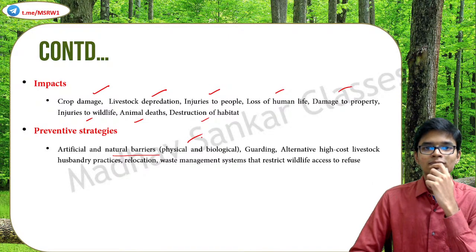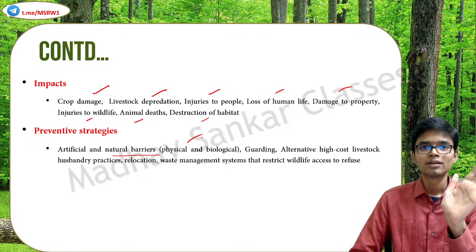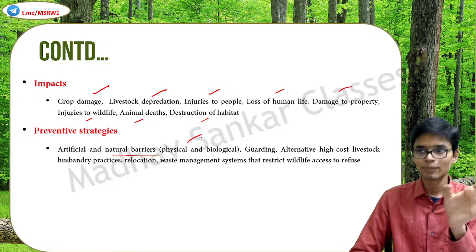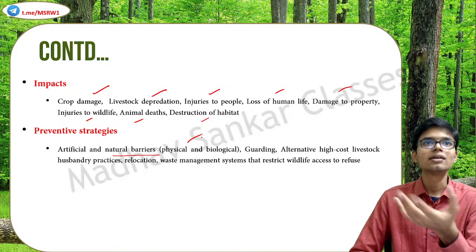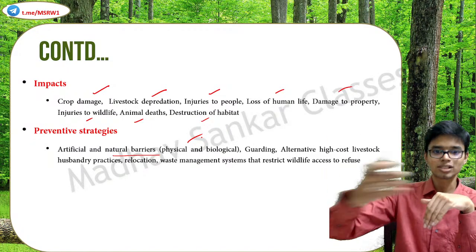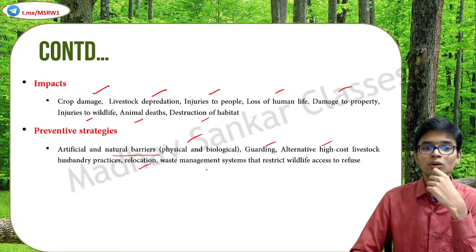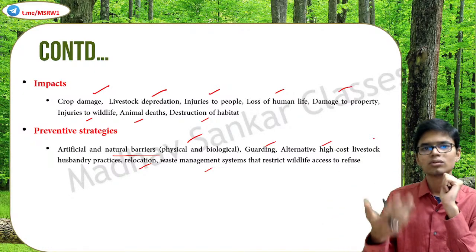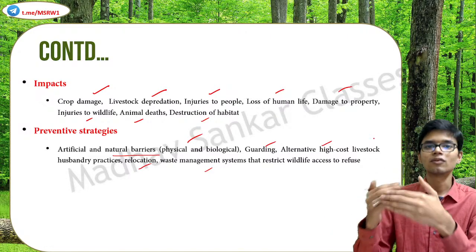Some important mitigation measures include artificial and natural barriers. Artificial barriers like electric fences have been proposed and implemented, but unfortunately we have heard about elephants being electrocuted due to higher voltage. Natural barriers include rivers or water channels between the forest and human territory. Other measures include guard posts, alternative livestock husbandry practices, relocation, and waste management systems that restrict wildlife access to refuse - since improperly dumped garbage attracts wildlife.